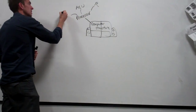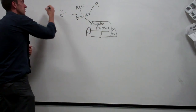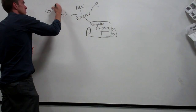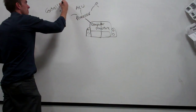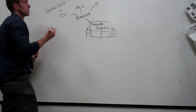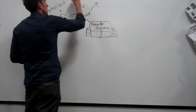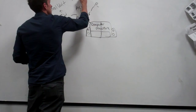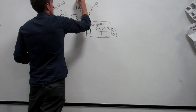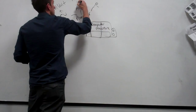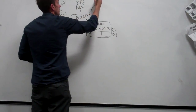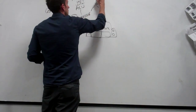What are we talking about? C.U. stands for? Control unit. And ALU? Arithmetic logic unit. And R? Registers.